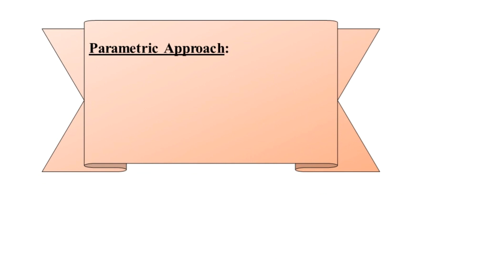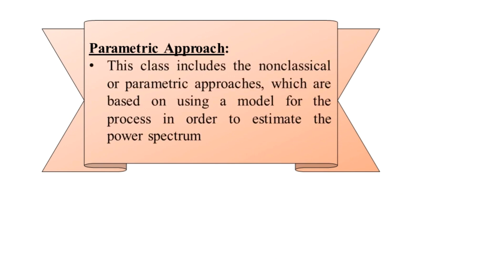The second approach is the parametric approach, which includes non-classical methods. These are based on using a model for the random process in order to estimate the power spectrum. Both the non-parametric and parametric approaches have been introduced here, with the parametric approach to be addressed in detail later in the same chapter.